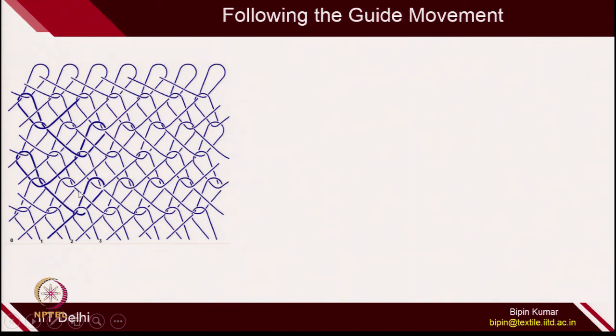Let me show you some examples. If you see this particular structure and carefully follow one yarn movement — follow the dark one — you can start from here. It first makes a loop this way, then moves to the first column making a loop, then moves to the third column, then again back to the first column. The movement of the guide is clearly visible in this fabric structure.